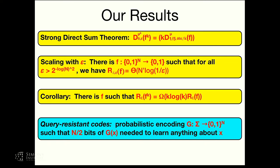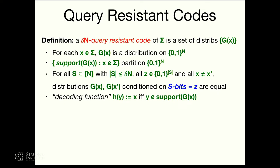Let me define a delta-n query-resistant code of some alphabet sigma. You can think of it as a probabilistic encoding: I take each letter in sigma and map it to a distribution on n-bit strings. The distributions need to be disjoint and partition all the n-bit strings. The technical requirement is that no matter what bits of the encoding you probe, information-theoretically you learn nothing about the original x — the two distributions are exactly the same no matter what bits you probe and whatever value you get. Because they partition the set of all n-bit strings, given an n-bit string I can decode it back to the x in the support of that distribution.